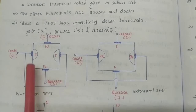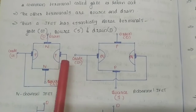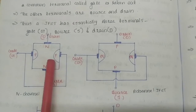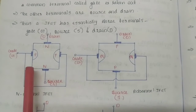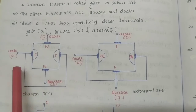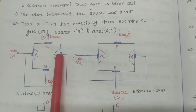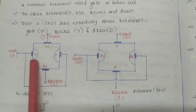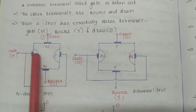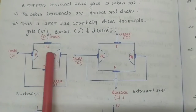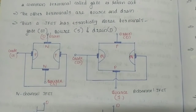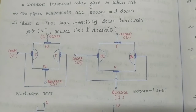Due to these P-type regions, two PN junctions are formed. Due to that, a depletion region is formed near the junction. The P-type material forms the depletion region near the N-channel junction.